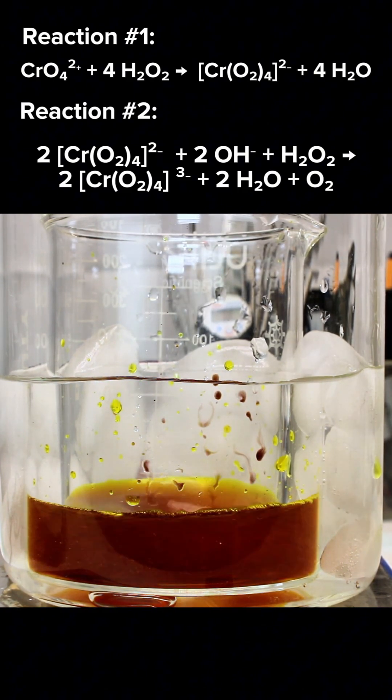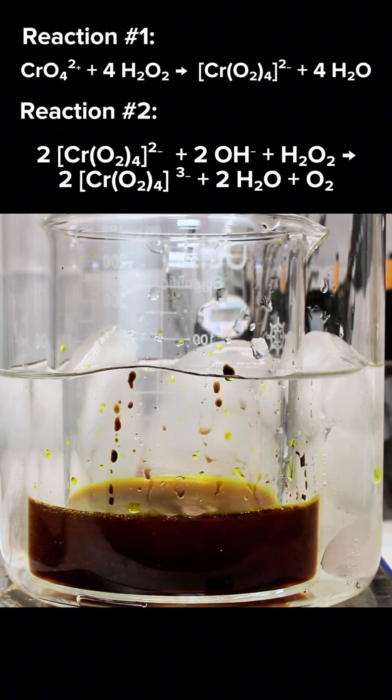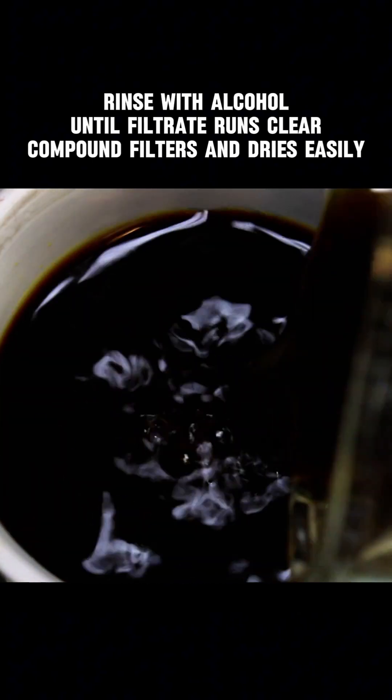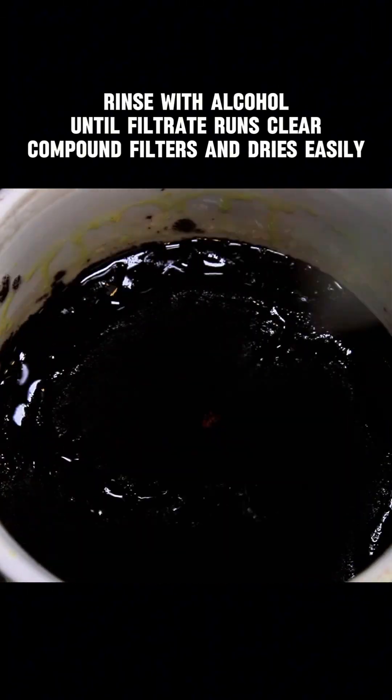This is an incredibly rare example of peroxide acting as a reducing agent. It's also an incredibly rare example of a compound stabilized only by peroxide ligands, and a super rare example of chromium in the plus 5 oxidation state.